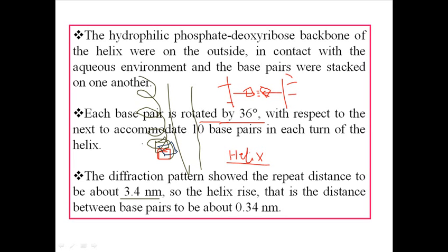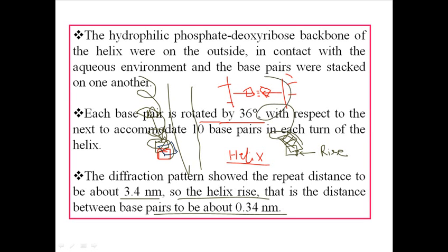The diffraction pattern showed a repeated distance of about 3.4 nanometers. This is the distance between one full turn of the helix — this is called the helix pitch. The distance between adjacent base pairs is called the helix rise. So one base pair to the next, that distance is the rise, and when it completes one full turn, the distance between those two turns is the helix pitch.